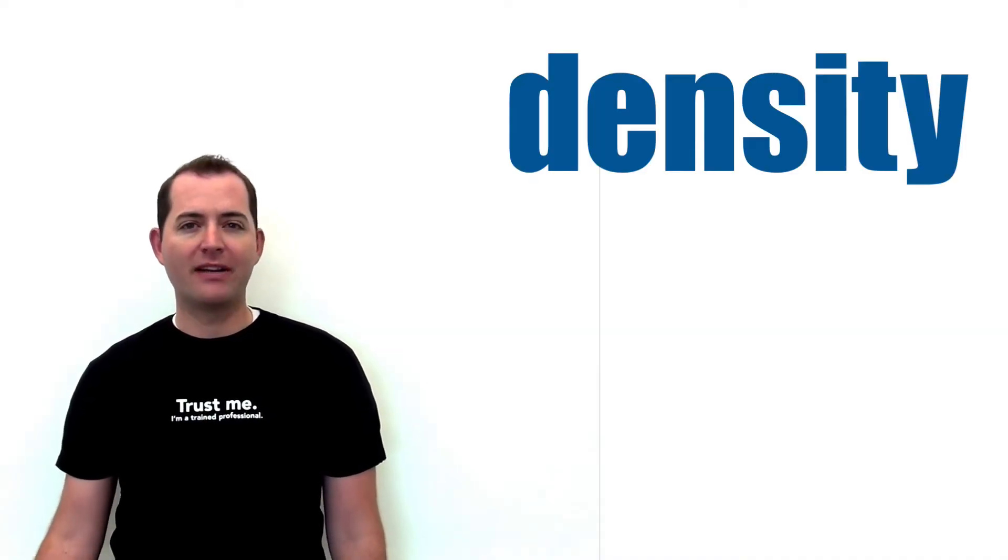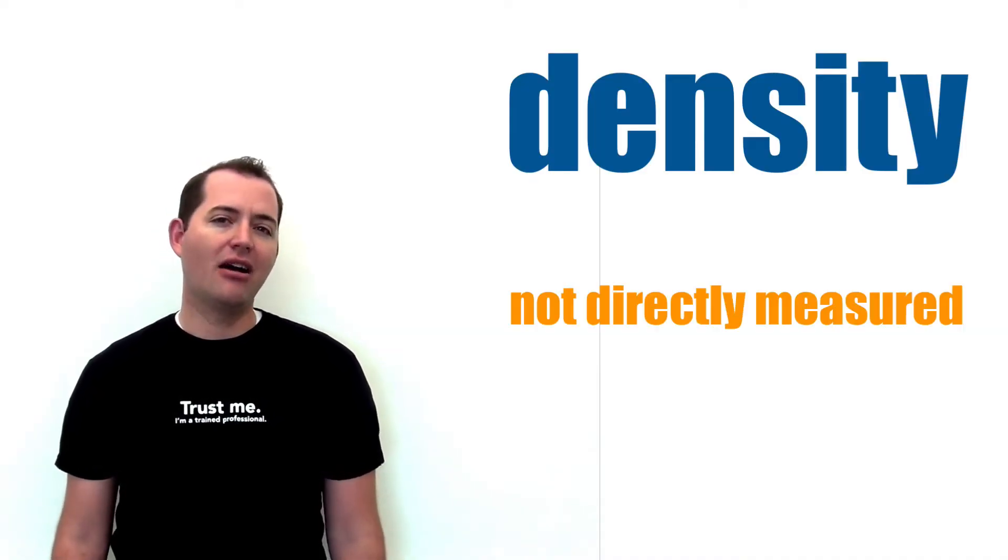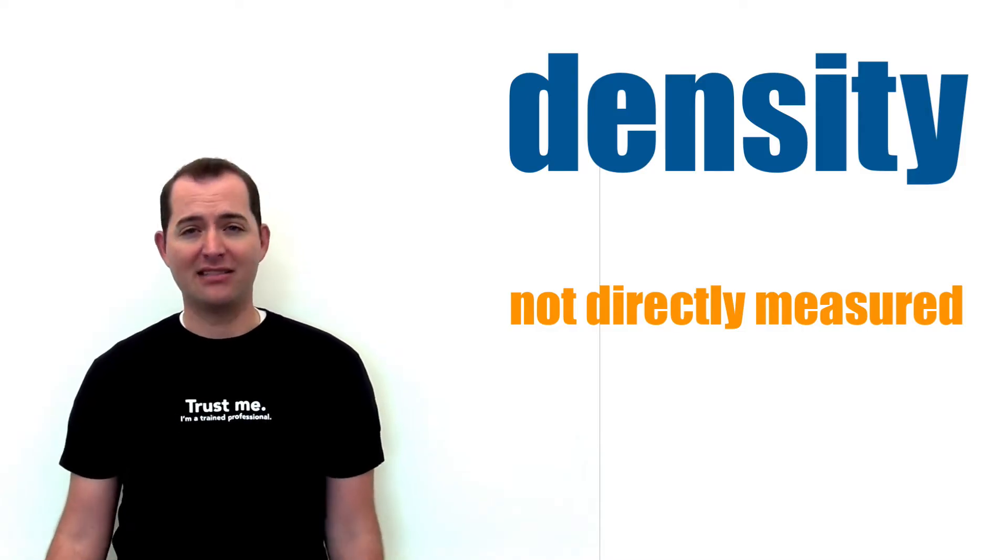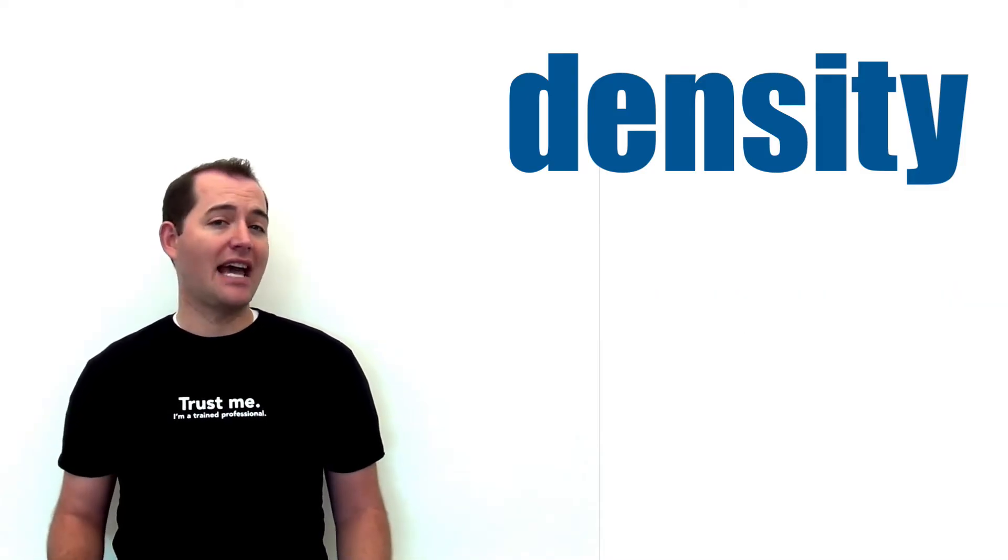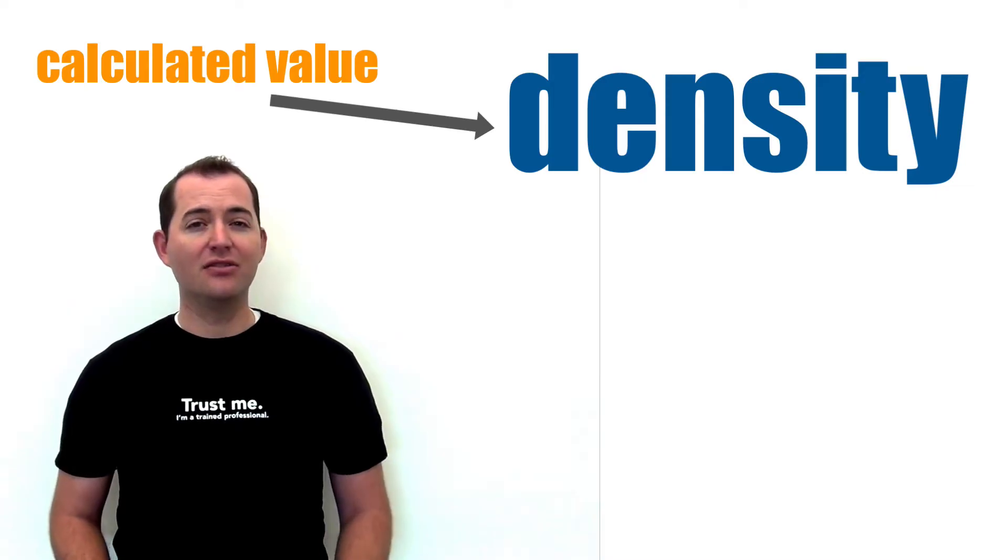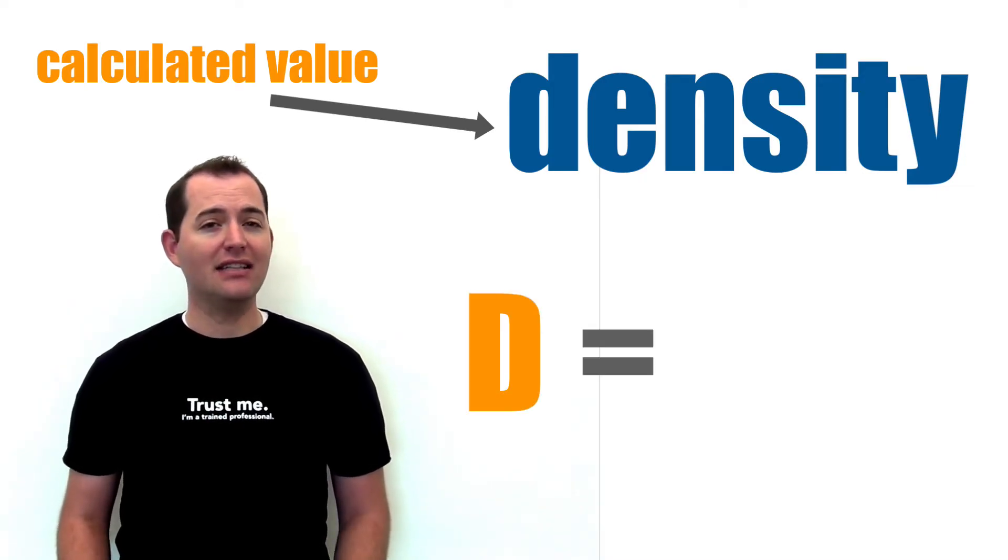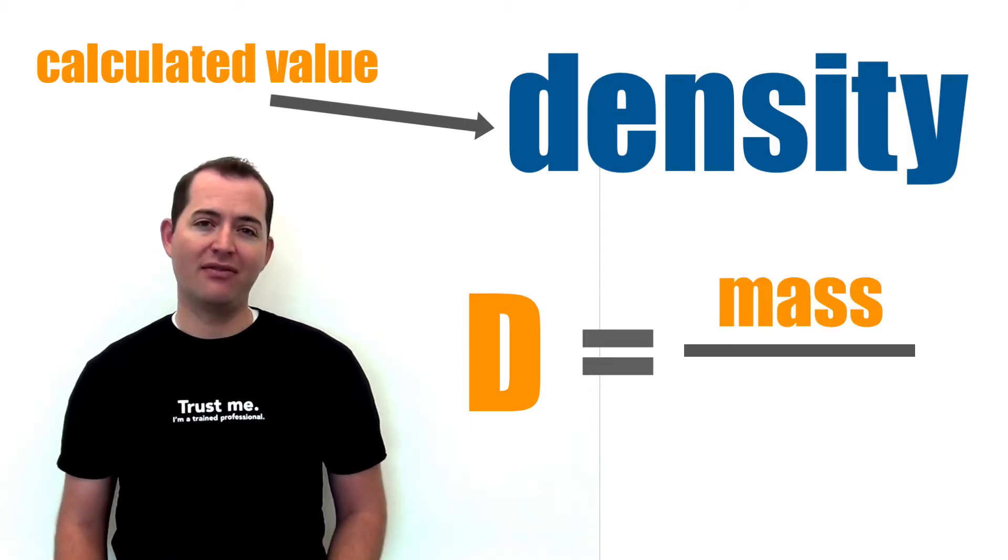Density is an important property of matter, but density cannot be directly measured like length, temperature, or mass. Density is actually a calculated value that uses both mass and volume. Its equation is density equals mass divided by volume.